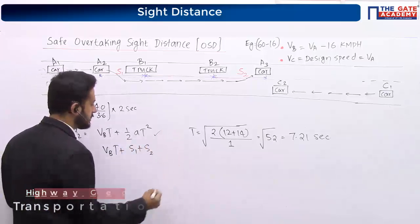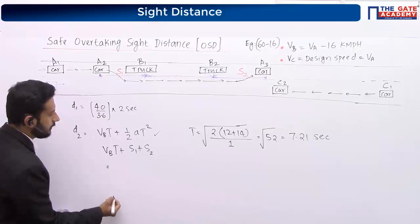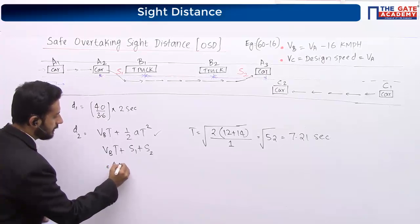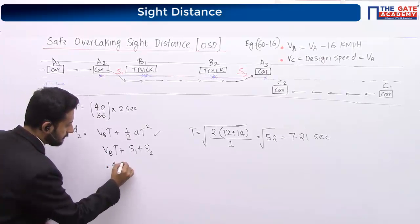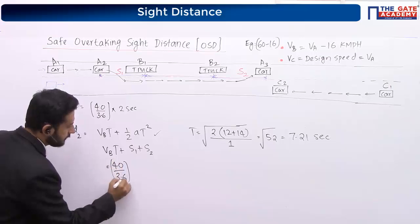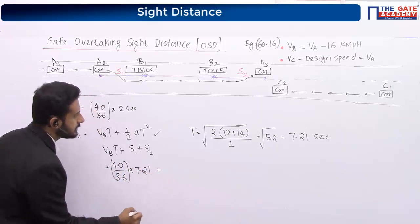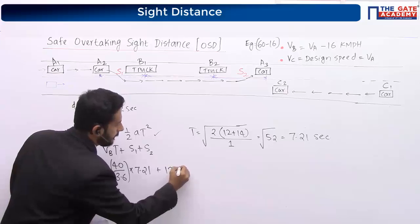Now just substitute. This equation we already used. It is equal to 40 by 3.6 into 7.21, plus 12 plus 40.